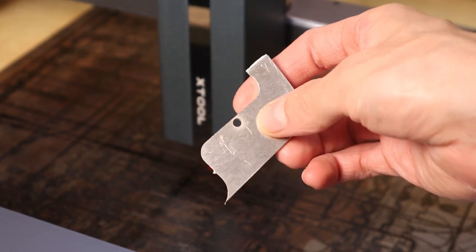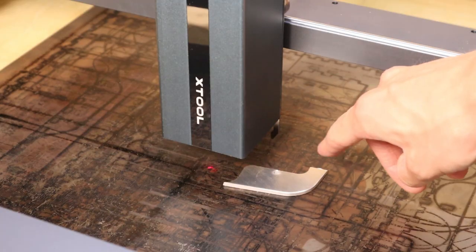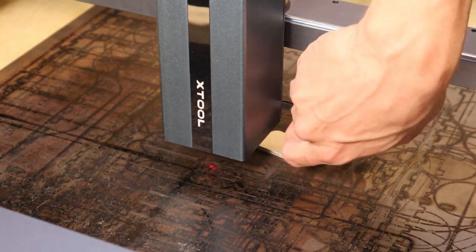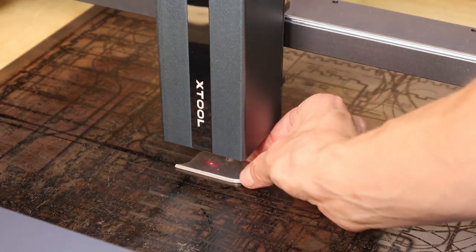Now let's try to engrave some raw aluminum. This laser can directly engrave raw aluminum, which is impossible to engrave using blue diode laser.